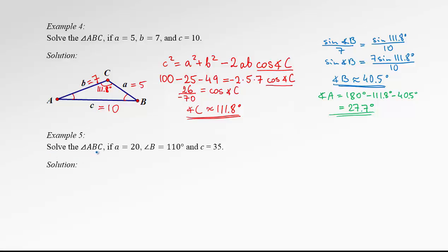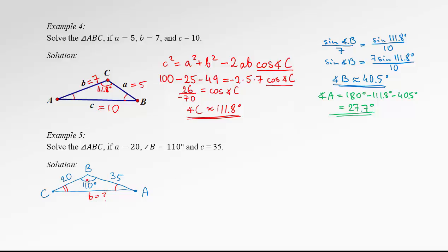Let's see another question. This time we need to solve a triangle given two sides and one angle, but the angle is enclosed by those two sides. Angle B is 110 degrees — an obtuse angle. Side A is 20 and side C is 35. Since we can't use the sine law — no pair of opposite data — we are going to use the cosine law, starting with side B as the pretended hypotenuse.